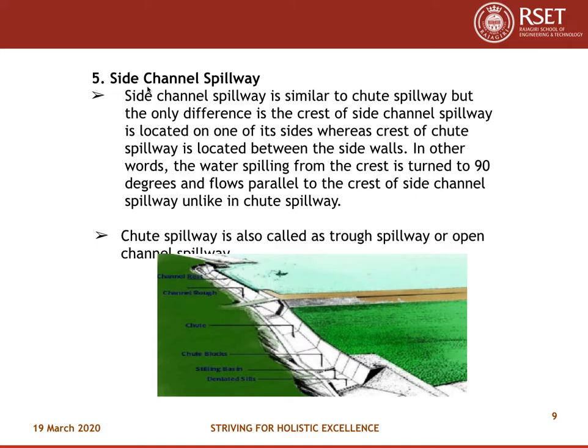Side channel spillway is similar to chute spillway, but the only difference is that the crest of the side channel spillway is located on one of its sides, whereas the crest of a chute spillway is located between the side walls. In other words, the water spilling from the crest is turned 90 degrees and flows parallel to the crest of the side channel spillway, unlike in chute spillway.